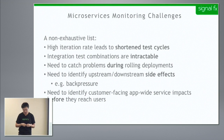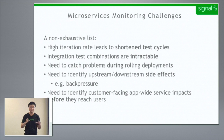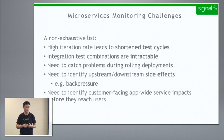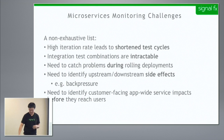How do you identify a problem before it becomes broadly noticeable? In a microservices environment, you rarely get a complete blackout where the entire service goes down. Most of the time, only pockets of customers report problems. The challenge is detecting which pockets of customers are affected, and why — these are very real, inherent challenges we live with every day.